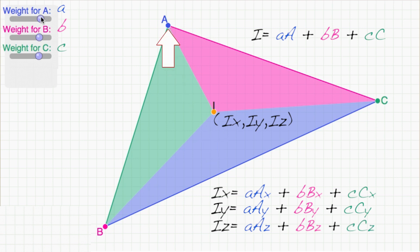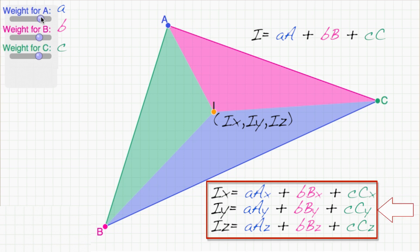We know i, big A, big B, and big C, so the only unknowns are little a, little b, and little c. So this is three equations and three unknowns that can be solved for the values of little a, little b, and little c.